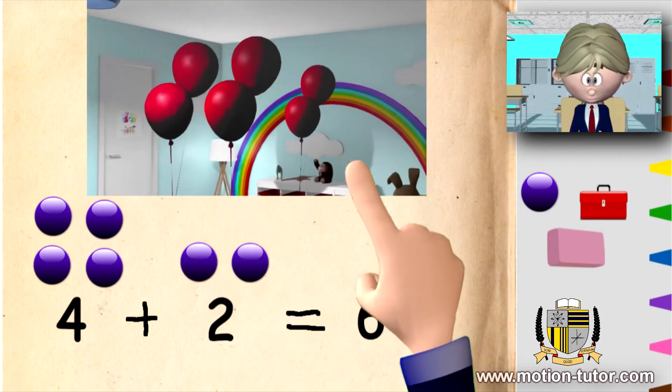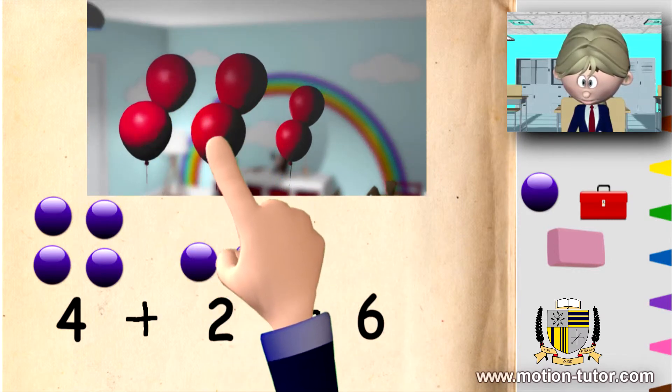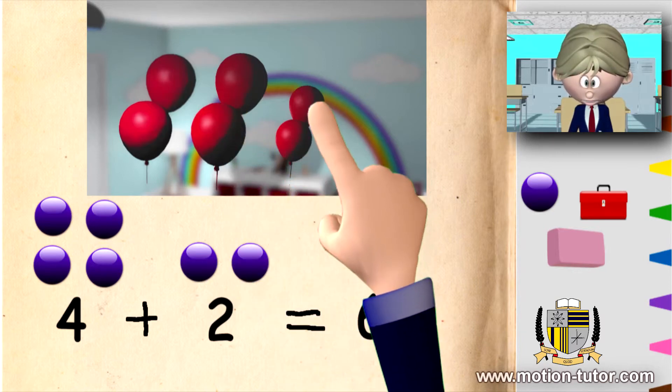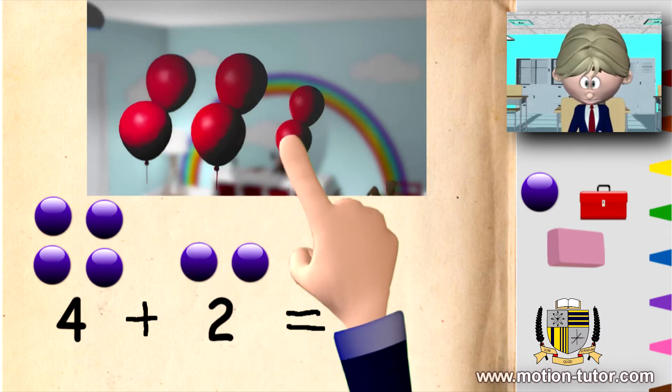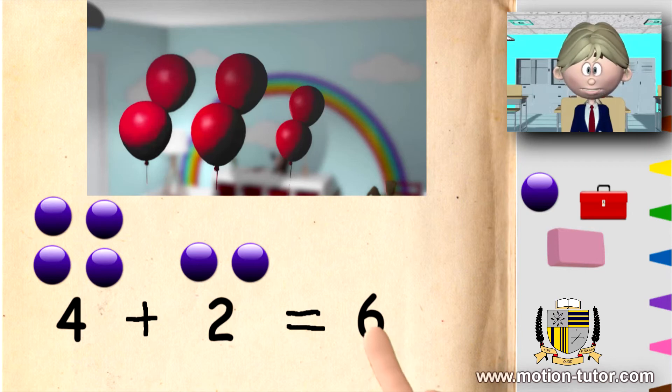As you can see, we have one, two, three, four large balloons, and then we have one, two smaller. But all together, we have one, two, three, four, five, six balloons. And here is our answer six.